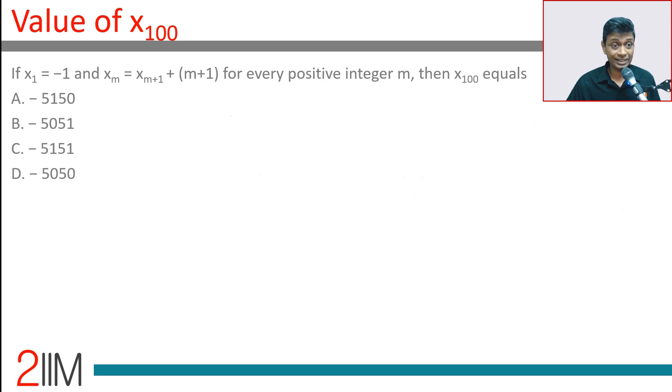If x1 = -(m+1) and xm = xm+1 + (m+1) for every positive integer m, let's work through this. A simple pattern should emerge. x1 is -1, and x1 = x2 + 2.